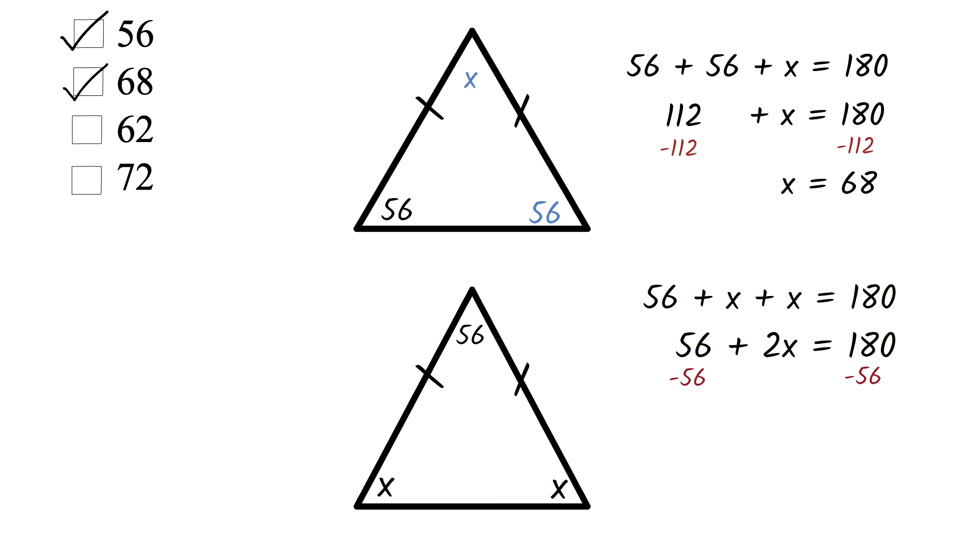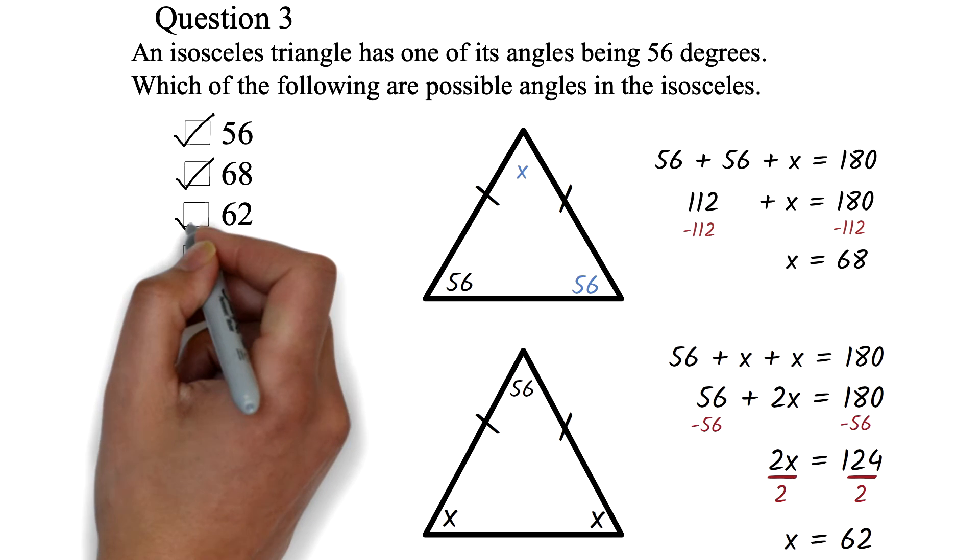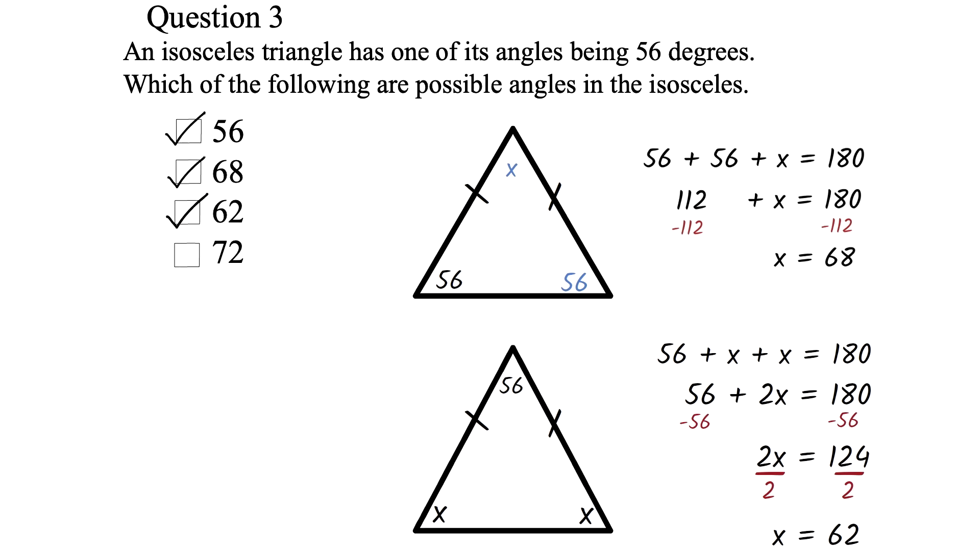Subtract 56 from both sides to get 2X equals 124. We finally divide both sides by 2 to get X equals 62. So the two angles are 62 degrees. This means 62 is also a possible angle. This is therefore our answer.